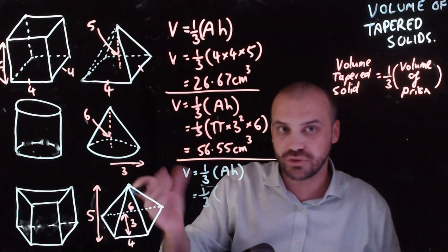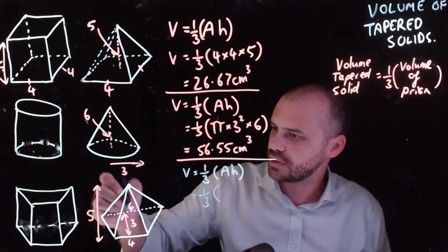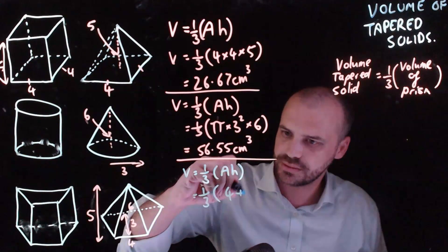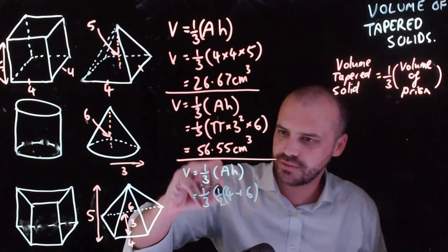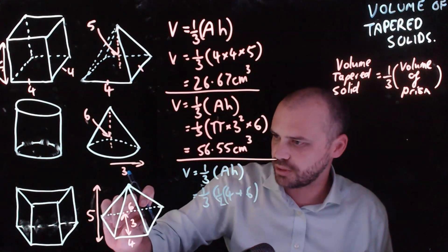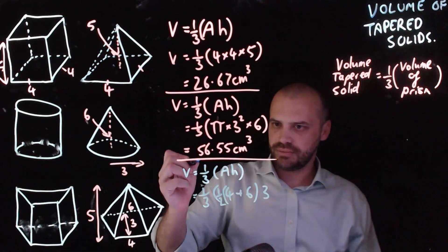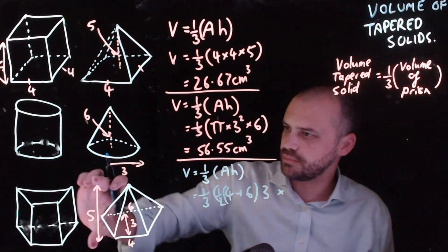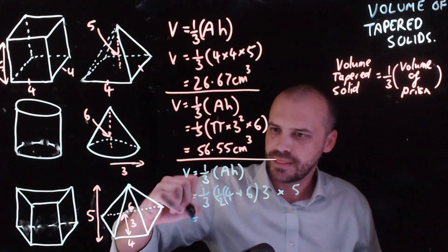Now, the base in this case is a trapezium. So we know that that's going to be a plus b, so four plus six. We need to multiply that by one-half, and then multiply it by the height of the trapezium, which is three. One-half, four plus six times three, and then multiply all of that by the height, which is five.